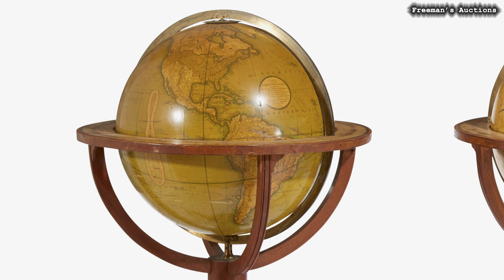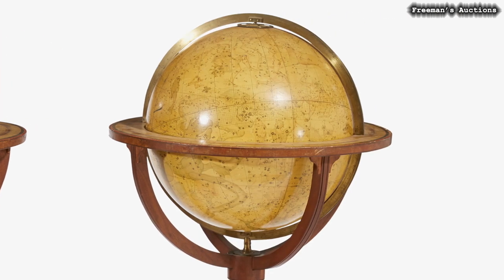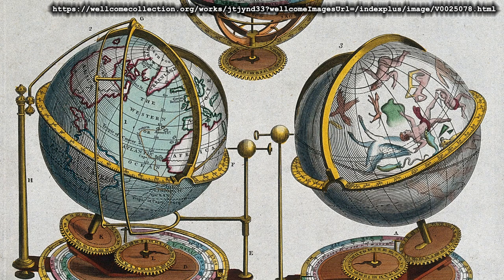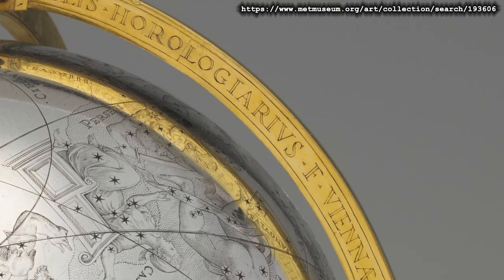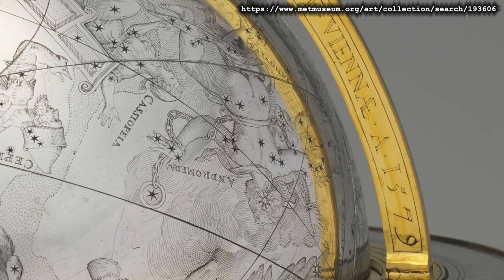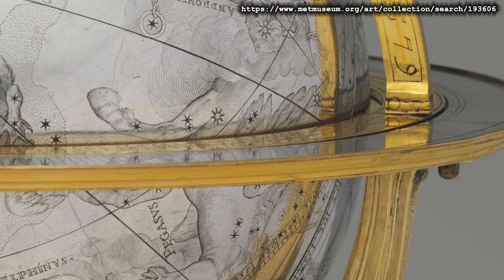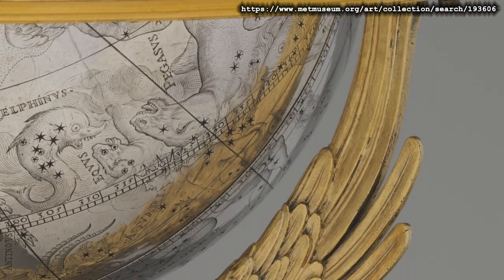This is a globe. A terrestrial globe, because it represents the earth. This is a celestial globe, which represents the heavens. Celestial globes are pretty rare now, but it used to be that globes almost always came in pairs. They're also kind of a trip, because the constellations are all shown backwards. They're the sphere of stars as seen from the outside.